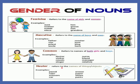Neuter gender refers to the name of things and objects. For example: pencil, ruler, scissors, card, erasers, paper, shoes, pants.